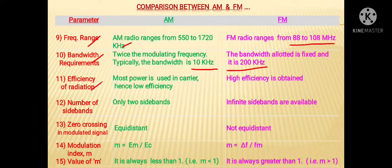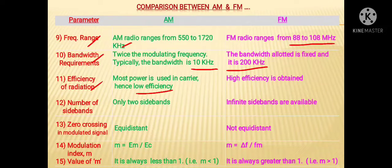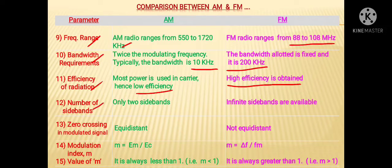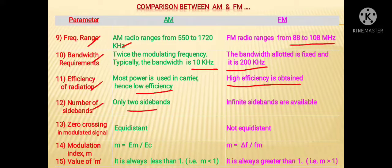About efficiency of radiation, in AM most power is used in the carrier, hence it has low efficiency, whereas in case of FM they are having high efficiency. Regarding number of sidebands, as per our last discussion, in AM there are only two sidebands, whereas in case of FM there are an infinite number of sidebands.